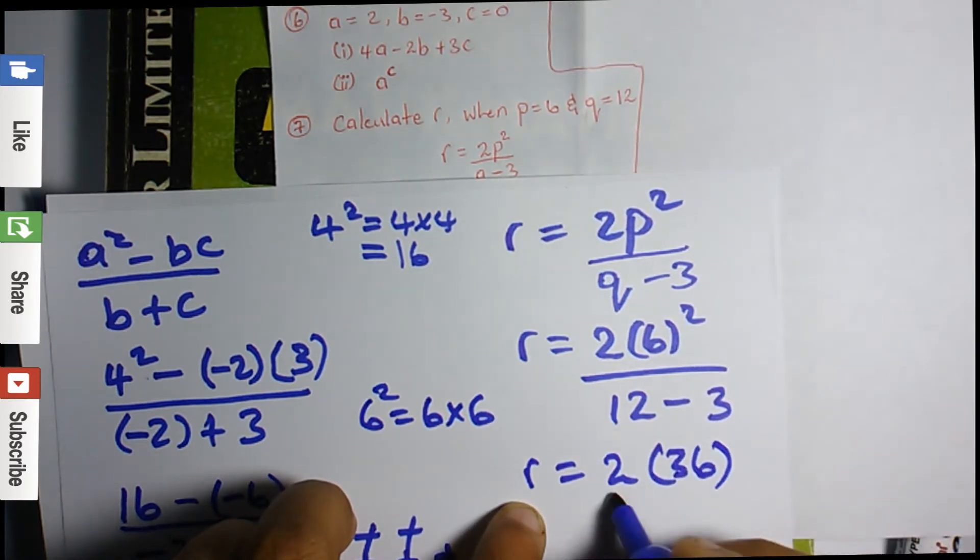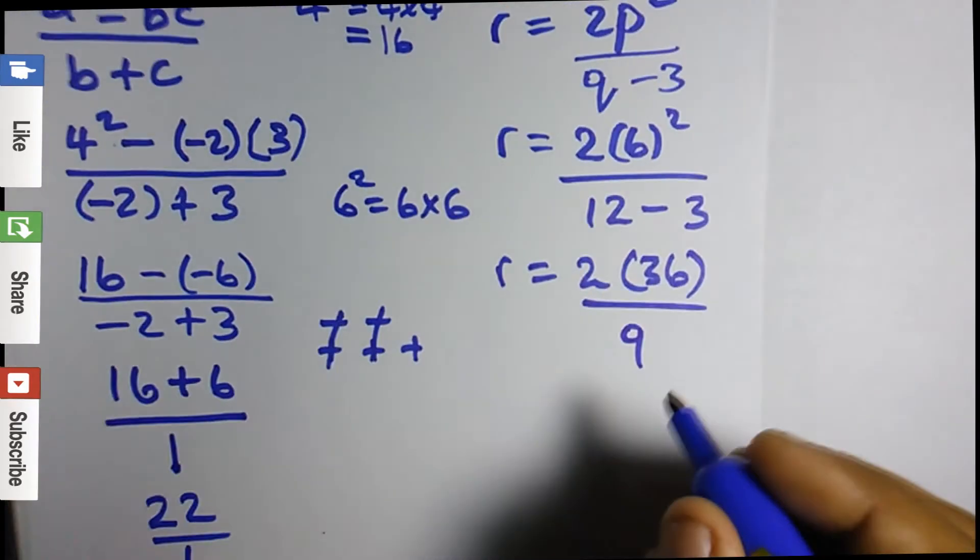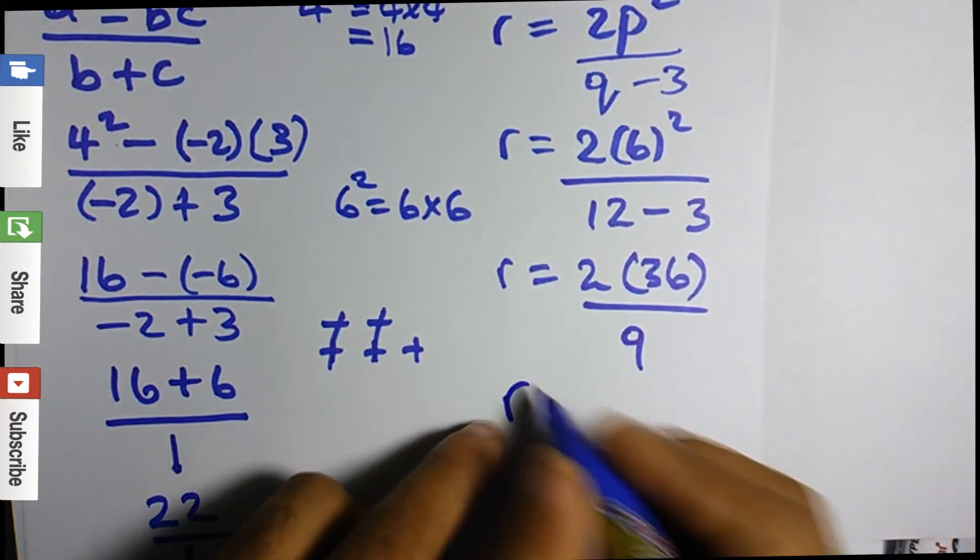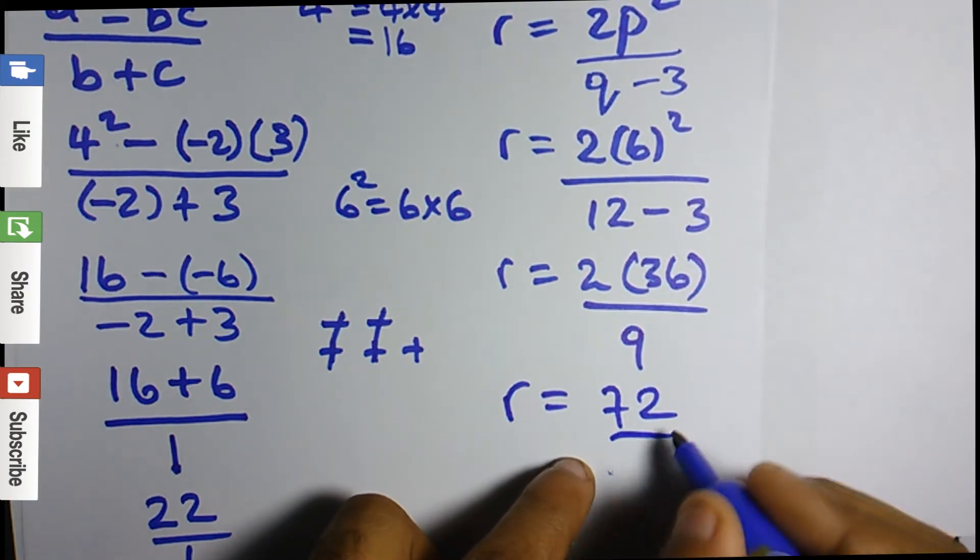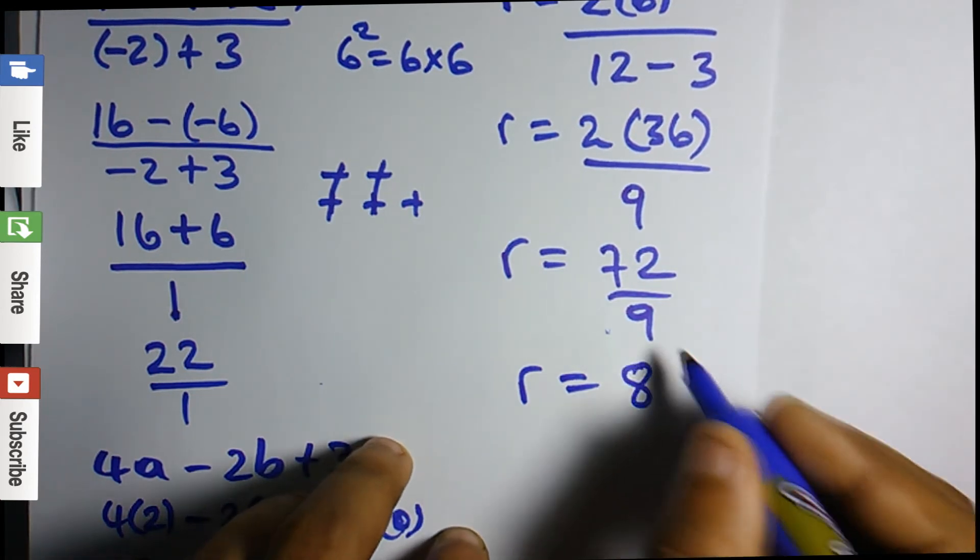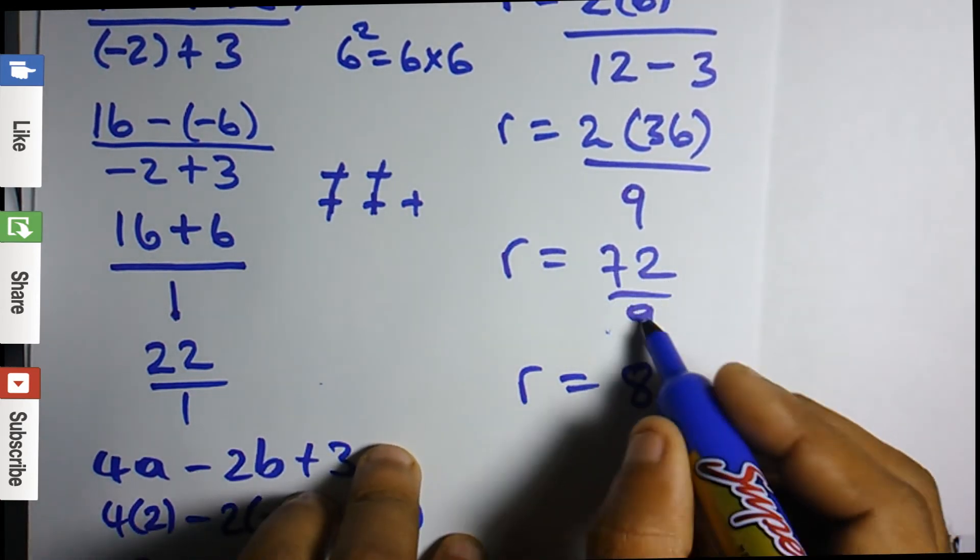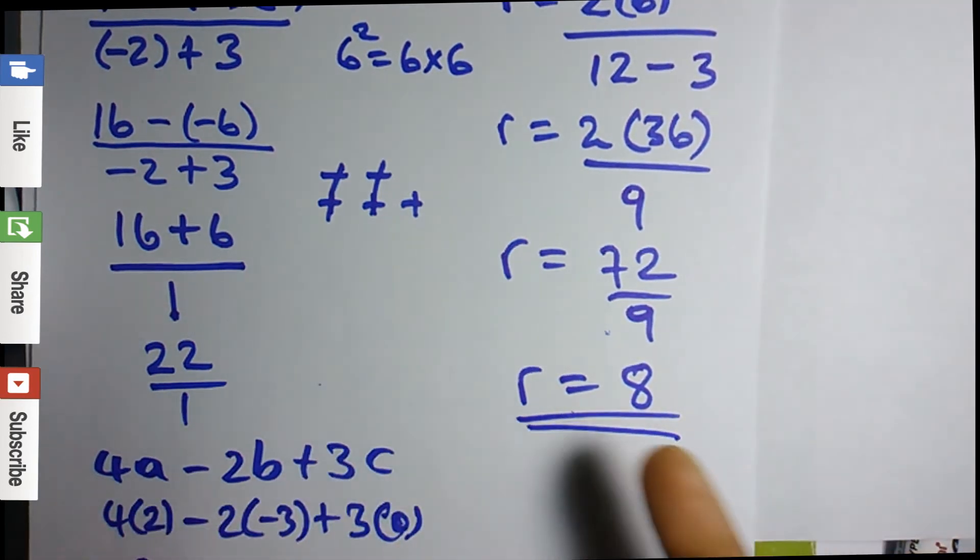2 times 36 is 72 divided by 9, and r is equal to 8. 9 into 72 goes 8 times. r is equal to 8.